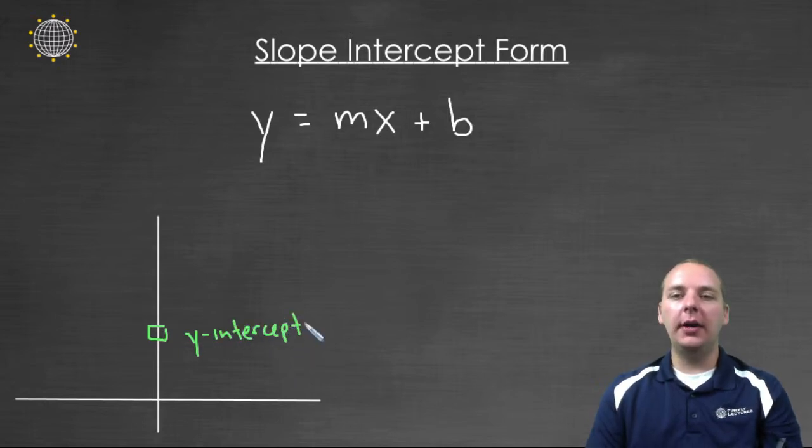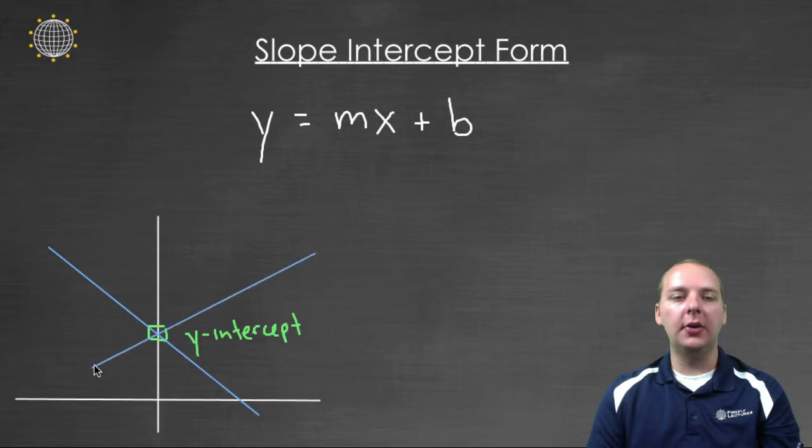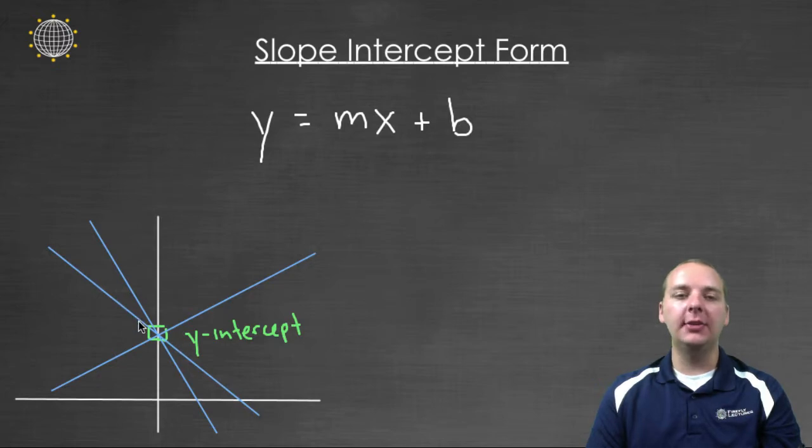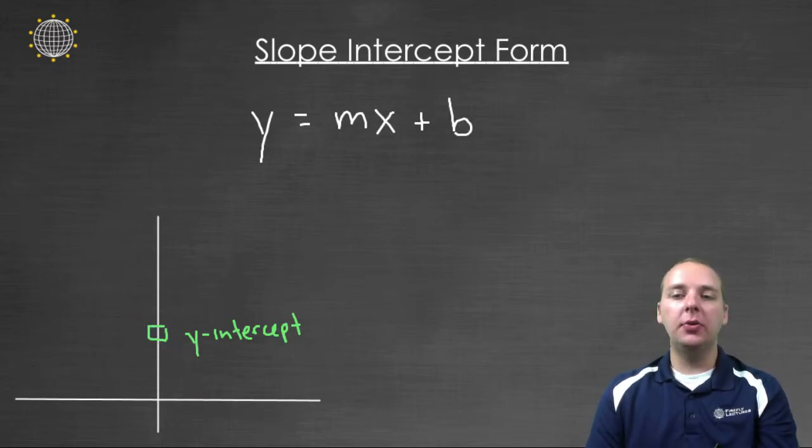Now just knowing the y-intercept isn't quite enough, because you could actually have a lot of different lines that go through a particular place on the y-axis. And all of these lines are different, so that doesn't uniquely identify a line. But if you also know the slope of your line, then that would uniquely identify a line.